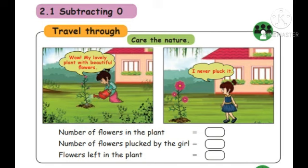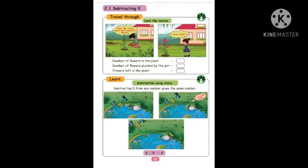Subtraction using story — subtracting zero from any number gives the same number. Look at the picture: how many butterflies and how many ducks are there? Nothing flew away from the pot, so the answer is zero only. Three minus zero — three came and were with the duck, then three went off. Three minus zero is equal to three.